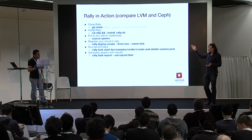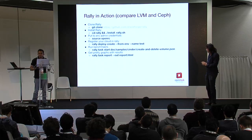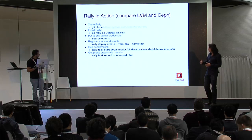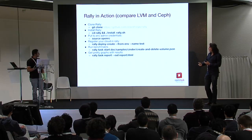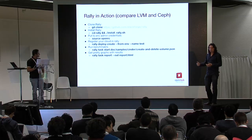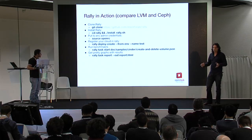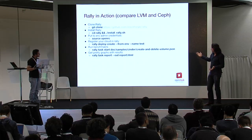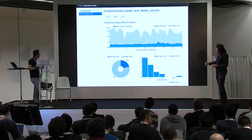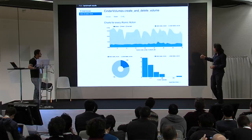To get Rally, you just clone it from StackForge. To install it, there is just one command — an automated installation script. Then you source your OpenRC file with your cloud credentials, and run one command, 'rally deployment create', which registers the deployment for Rally. The next command runs from the samples a create-and-delete volume benchmark that creates and deletes volumes from different users. The last command builds a pretty HTML report with results. From this graph we can get a lot of interesting information about how different the durations are for creating versus deleting a volume, and we can get the distribution of operations.